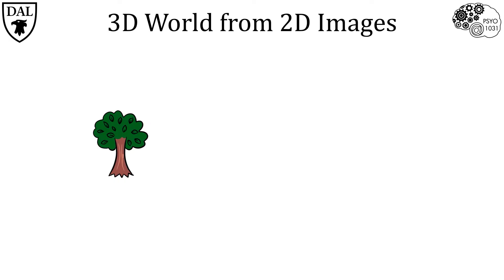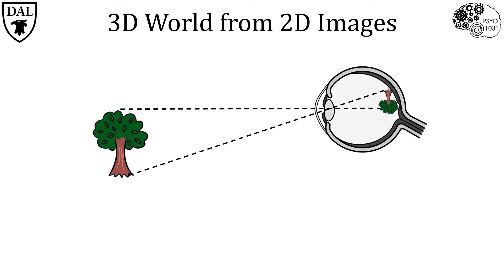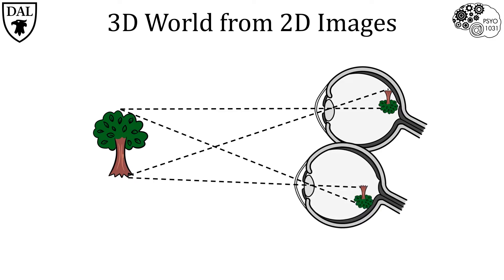We can easily perceive height, width, and depth in our three-dimensional world, but it may surprise you that the images projected onto the retina are only in two dimensions — height and width. So how are we able to perceive depth? The biggest influence comes from binocular depth cues — that is, the information coming from both eyes, which provides depth information to the brain.